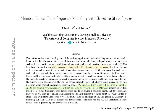They tell us that transformers have this computational inefficiency on long input/output sequences, and they propose their solution: integrating selective SSMs into a simplified end-to-end neural network architecture without the attention mechanism or even the multi-layer perceptron blocks. They call it the Mamba architecture. Mamba enjoys inference with five times higher throughput than transformers and linear scaling in sequence length, compared to the quadratic scaling of transformers.